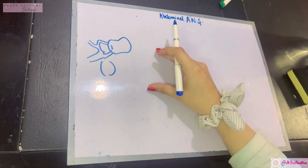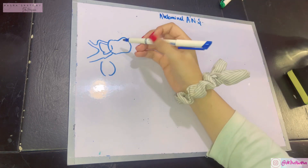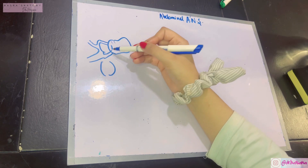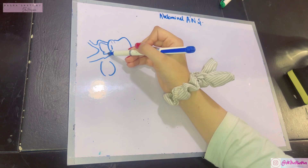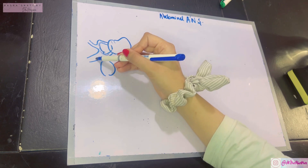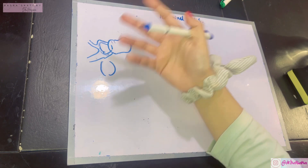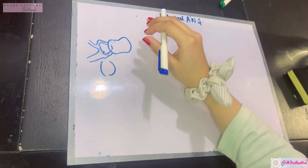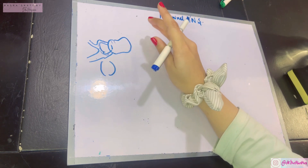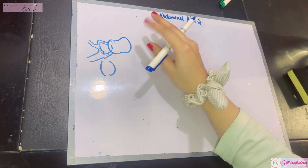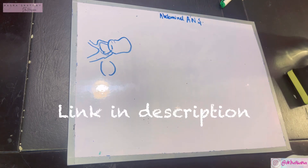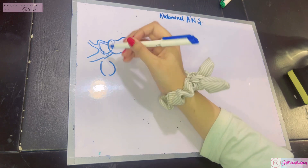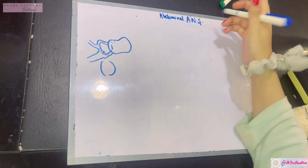Before we start the ANS, we should always begin from the very basis of every system. We all know this is a spinal nerve — the spinal nerve has a posterior root and a ventral root. The sensory fibers come, the motor fibers come, they mix up and an anterior primary ramus and a posterior primary ramus form. If you want to know more about the basics, check out my other videos where I explained the thoracic sympathetic chain.